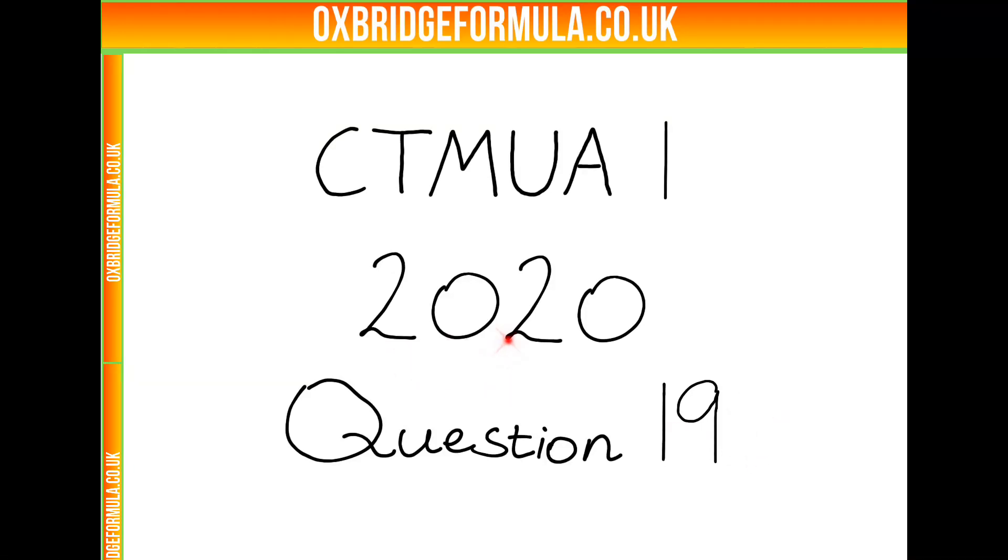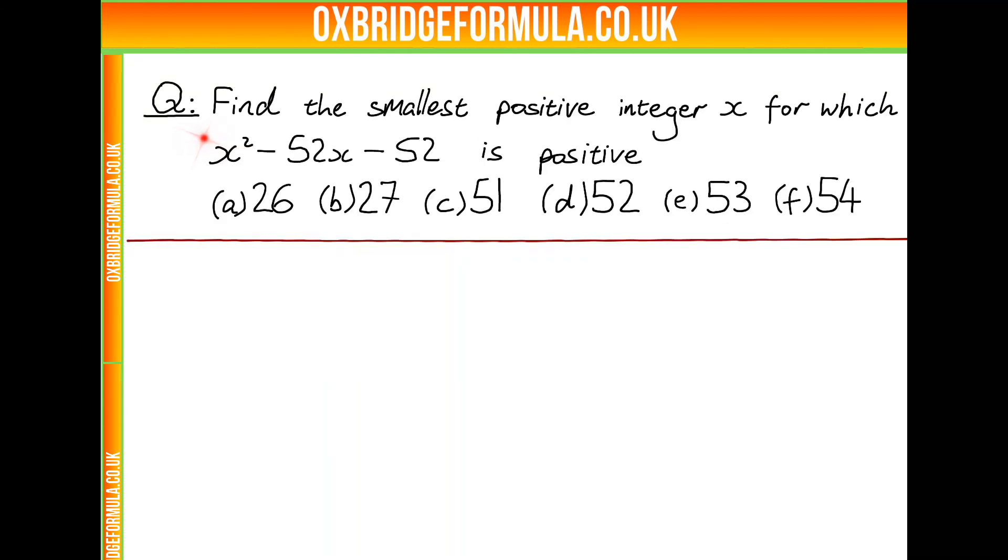Welcome to question 19 from the 2020 CTMUA paper 1. The question asks us to find the smallest positive integer x for which x squared minus 52x minus 52 is positive.